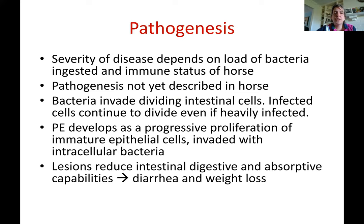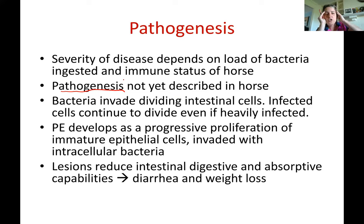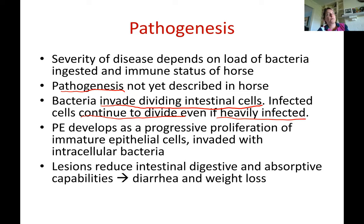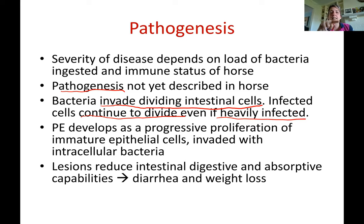The severity of the disease depends on the bacterial load ingested and the immune status of the horse — similar to salmonella. The pathogenesis in horses is not yet fully described. We know the bacteria invade dividing intestinal cells, which continue to divide even when heavily infected. This differs from rotavirus or salmonella, where infected intestinal cells die and villi become blunted, allowing GI contents to contact blood circulation.